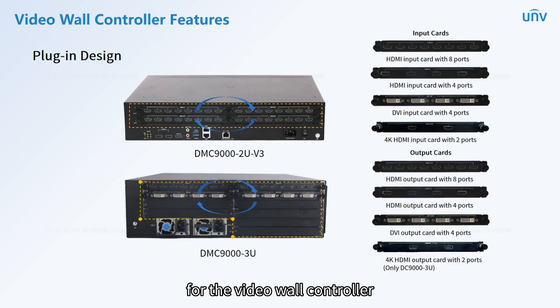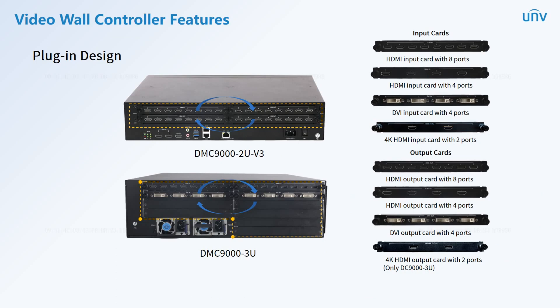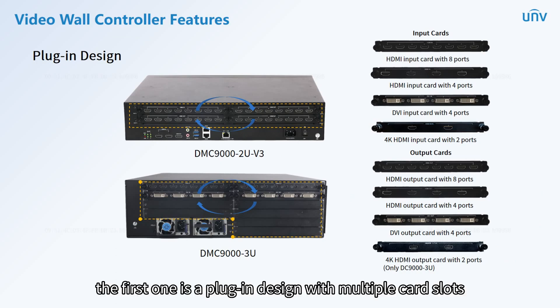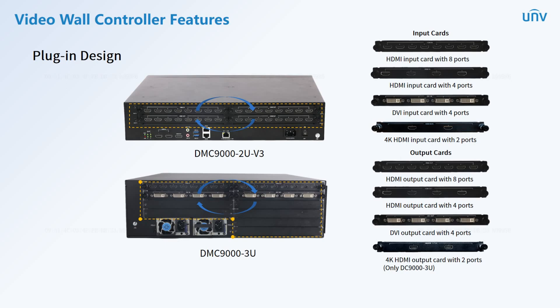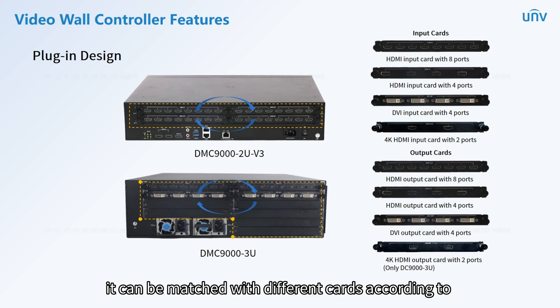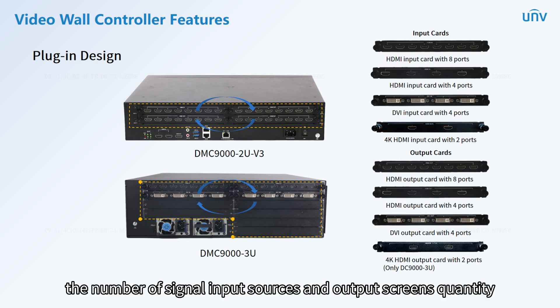For the video wall controller, there are two main features. The first is a plug-in design with multiple card slots, supporting HDMI and DVI board cards with 2, 4, or 8 ports optional. It can be matched with different cards according to the number of signal input sources and output screen quantity.